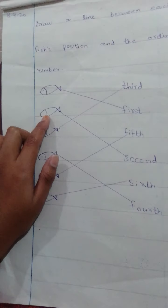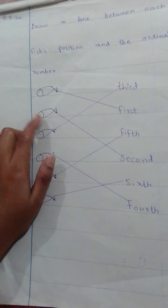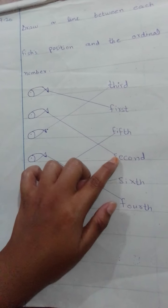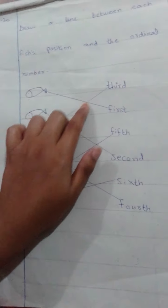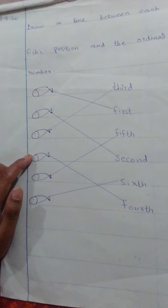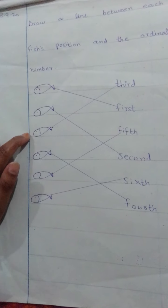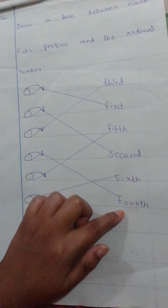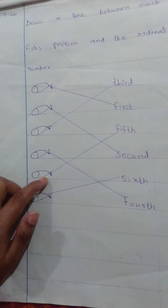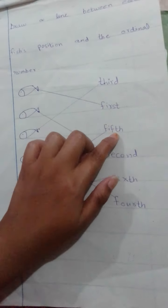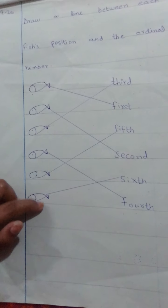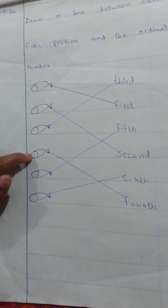The position of the first fish is first — match it with 'first.' The position of the next fish is second — match with 'second.' Then third — match with 'third.' Then fourth — match with 'fourth.' Then fifth — match with 'fifth.' Then the sixth fish — match with 'sixth.'